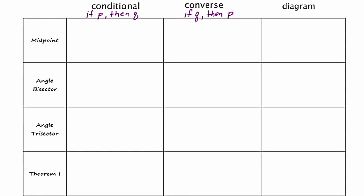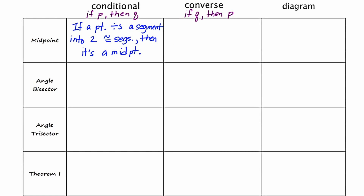Let's continue with our next definition, which is for midpoint. If a point divides a segment into two congruent segments, then it is a midpoint. Notice the use of abbreviations — those are permissible for you too when you write these definitions, just to save you a little bit of time.